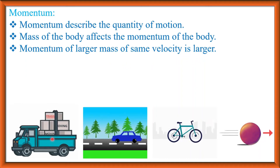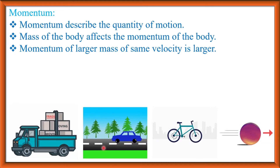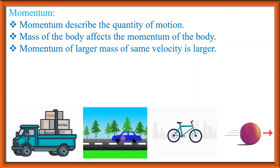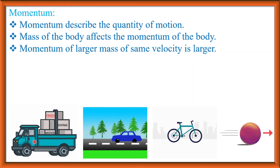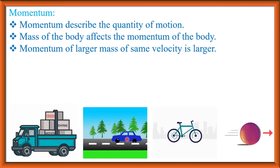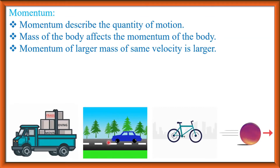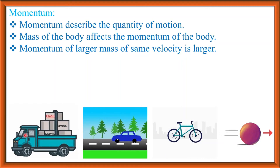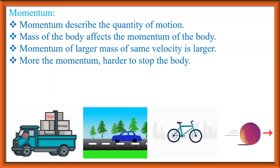If a truck and a car move with the same velocity, the momentum of the truck will be more than that of the car because the mass of the truck is more than the mass of the car. So if these two — that is, truck and car — move with the same velocity, then the momentum of the truck will be more. More the momentum, harder to stop the body.